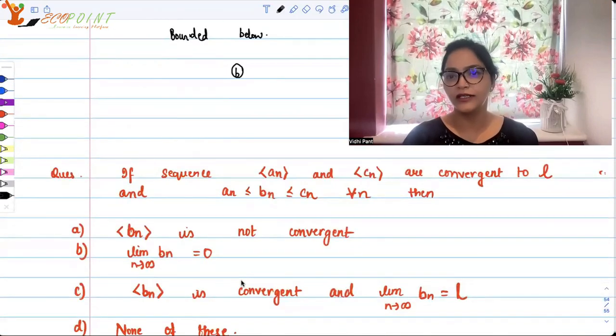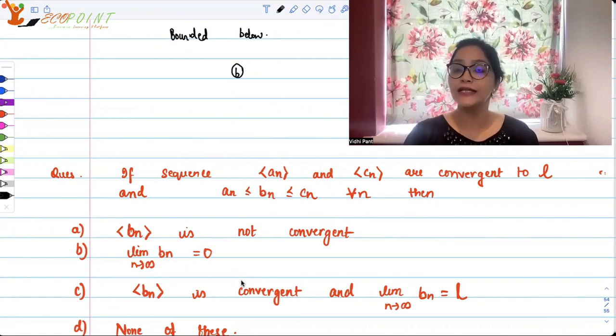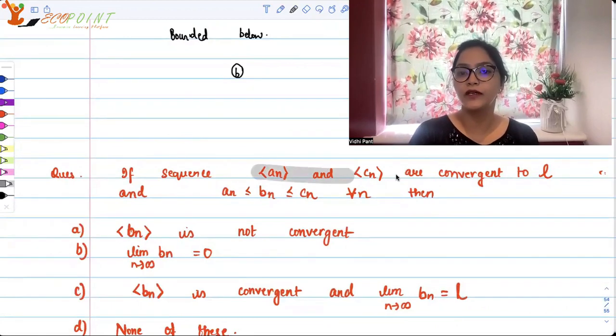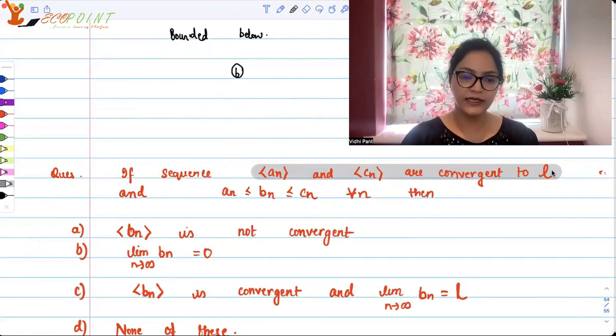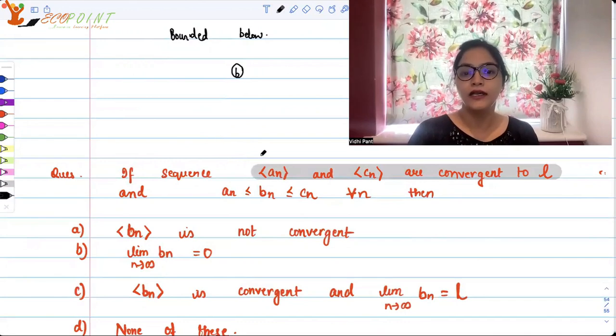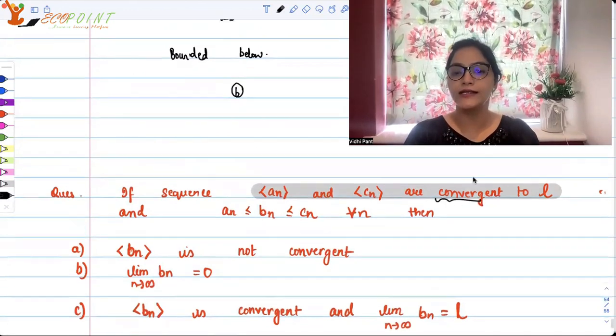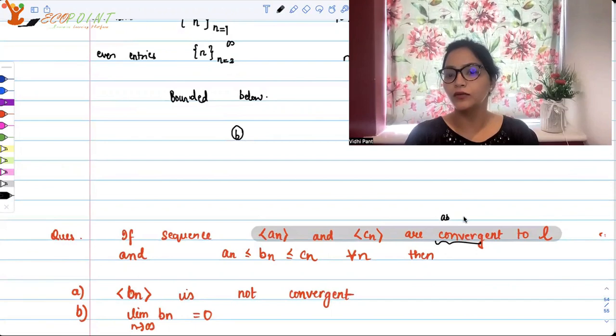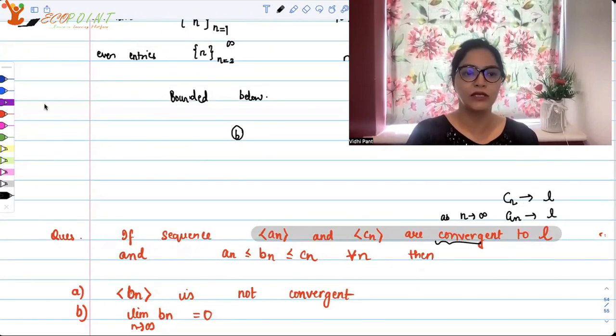Another question, now that we are, I thought that let's just bring in another question in order to revise sequences. If sequence AN and CN are convergent, they're convergent to say some limit L. The moment you say it's convergent to L, it basically means that convergence is always checked as N goes to infinity. So basically as N goes to infinity, AN as well as CN, they both are tending towards L. That's what it means.